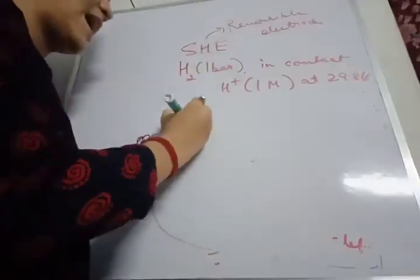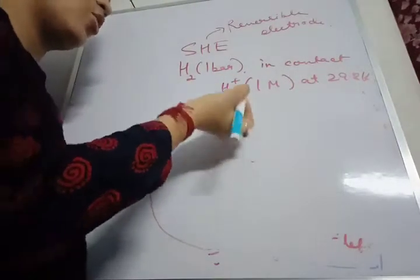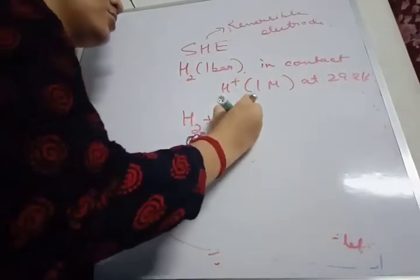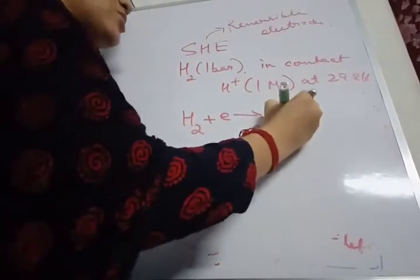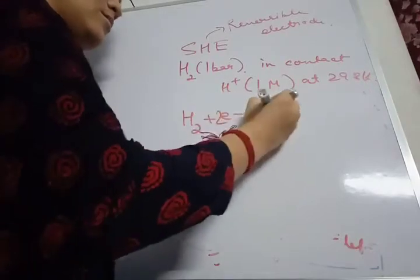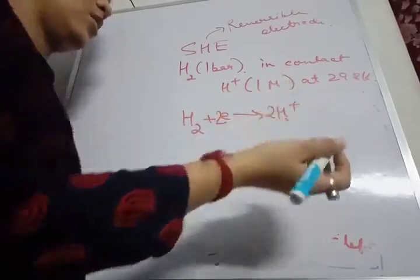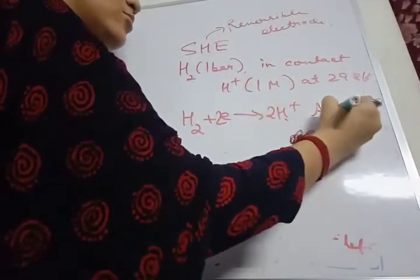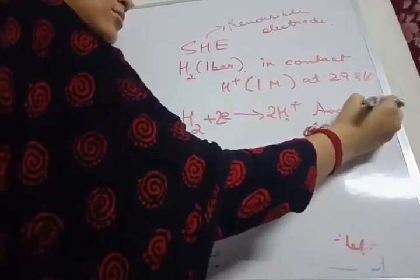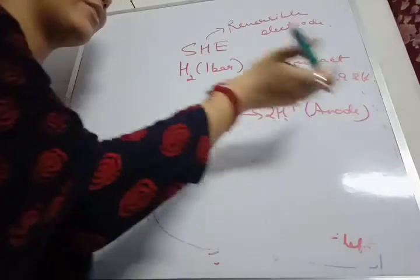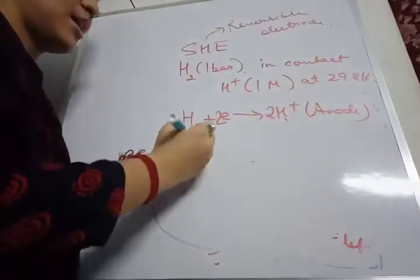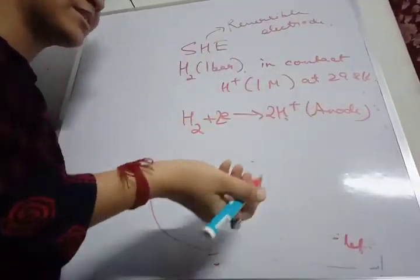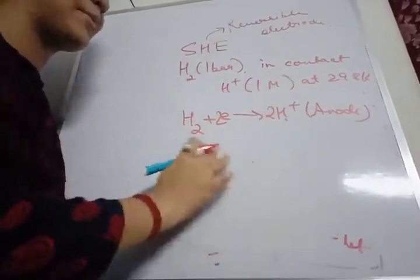When SHE acts as anode, oxidation will occur — so the reaction at the anode will be H₂ → 2H⁺ + 2e⁻. And when it acts as cathode, the opposite reaction occurs: 2H⁺ + 2e⁻ → H₂. So at anode, oxidation occurs, and at cathode, reduction occurs.